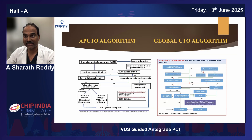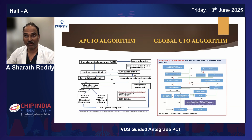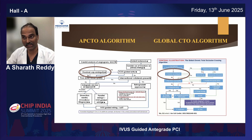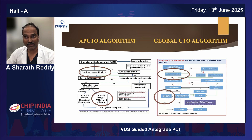A couple of 10 minutes - I explored IUS in antegrade wiring of CTOs. But if you look at algorithms, the epi-CTO algorithm, global CTO algorithm, hybrid algorithm, and Chinese algorithm, what we can prominently see is proximal cap ambiguity is something where we use IUS for cap puncture.